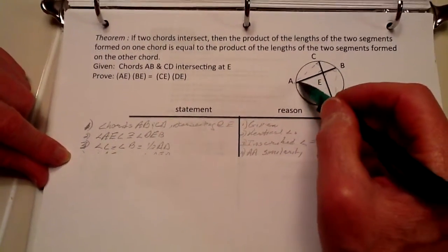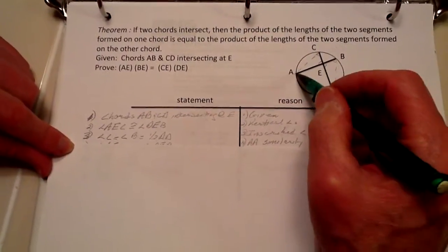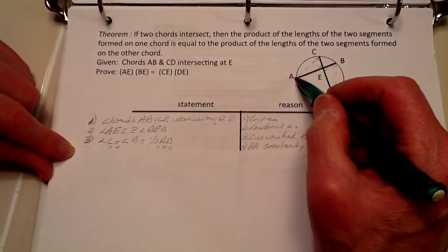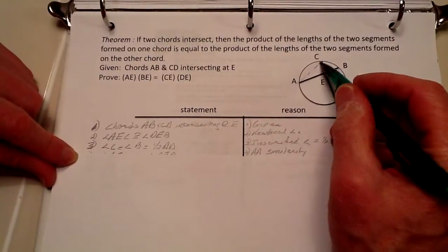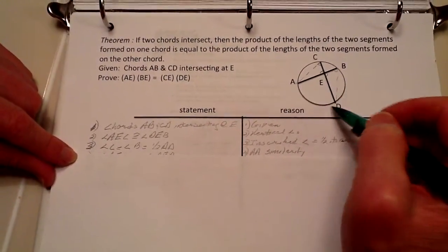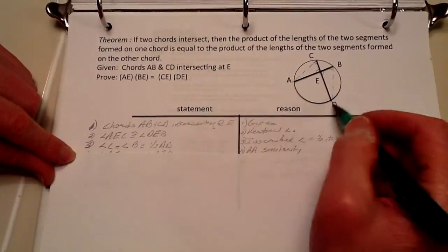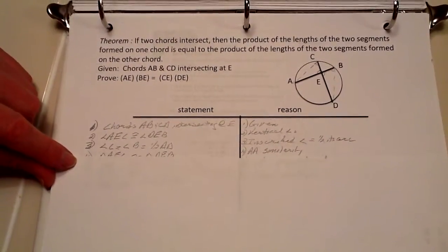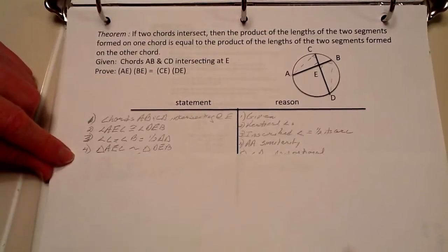The reason we know that, look here, because they share the same arc of AD, and we know that these both are inscribed angles, and therefore this is going to be equal to one half of this arc, which is using that theorem of the inscribed angle.